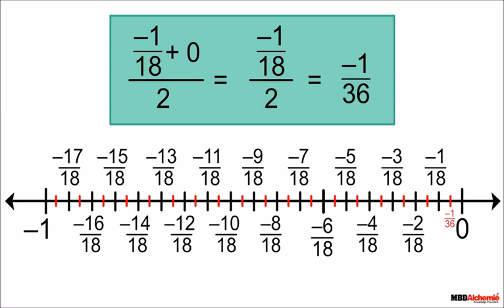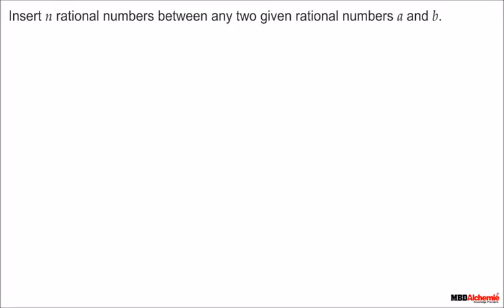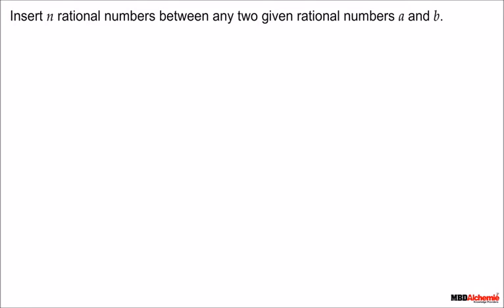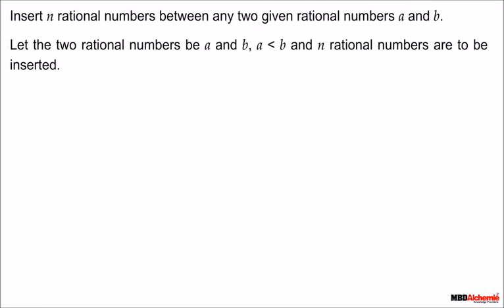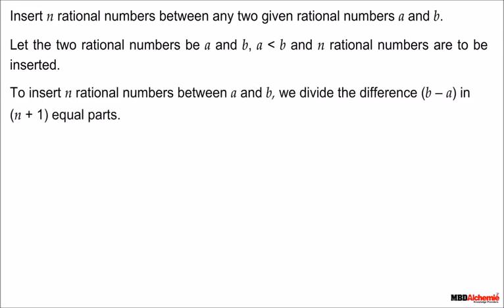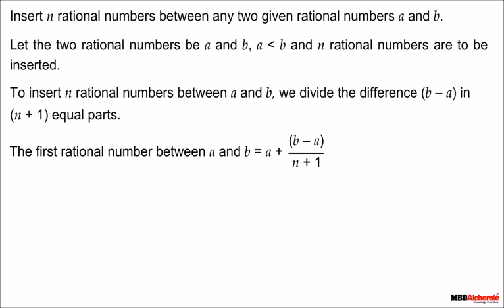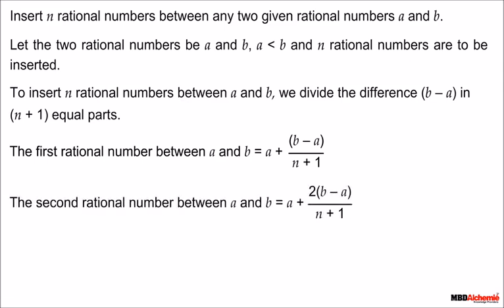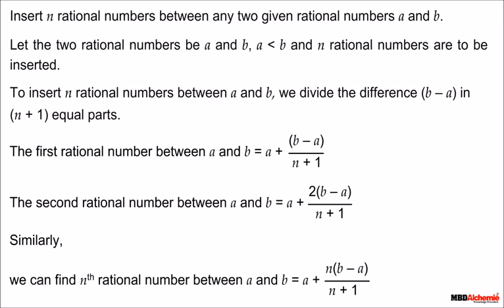To insert n rational numbers between any two given rational numbers a and b, where a is less than b, we divide the difference b minus a into n plus 1 equal parts. The first rational number between a and b is a plus (b minus a) upon (n plus 1). The second rational number is a plus 2 times (b minus a) upon (n plus 1). Similarly, the nth rational number between a and b is a plus n times (b minus a) upon (n plus 1).